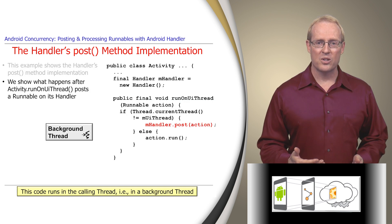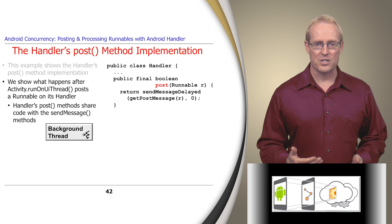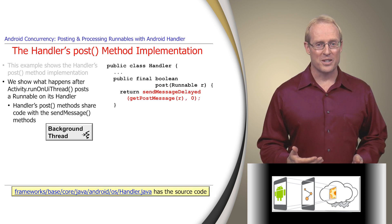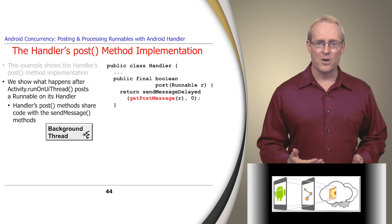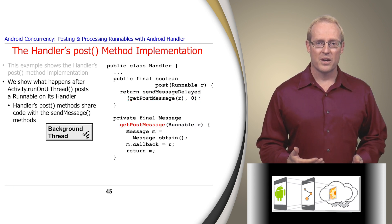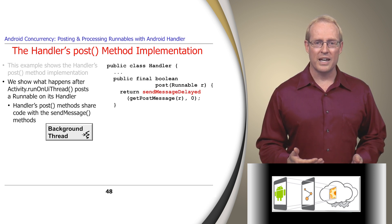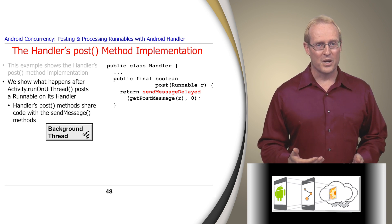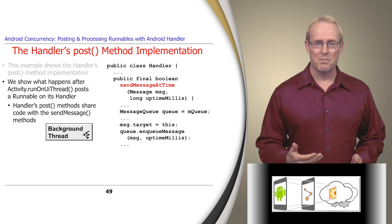When an action is posted to the activity from a background thread, the handler's post method adds the runnable action to the looper's message queue. This method performs several steps, many of which are shared with the send message methods, as shown at this path name. First, post calls the getPostMessage method, which obtains a message from a factory and encapsulates the runnable as a callback field in the message. Post then inserts this encapsulated runnable into the message queue via a call to sendMessageDelayed with a delay of zero, which ultimately calls the sendMessageAtTime method.